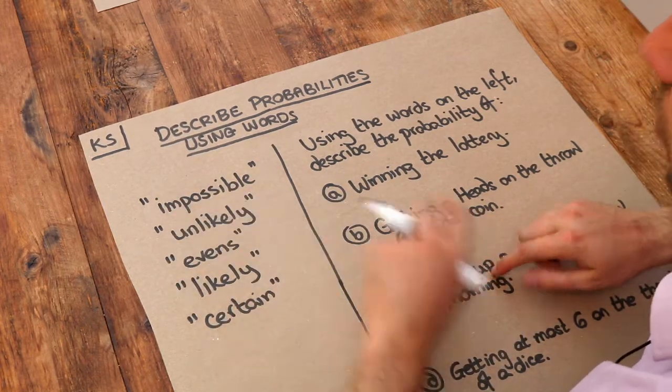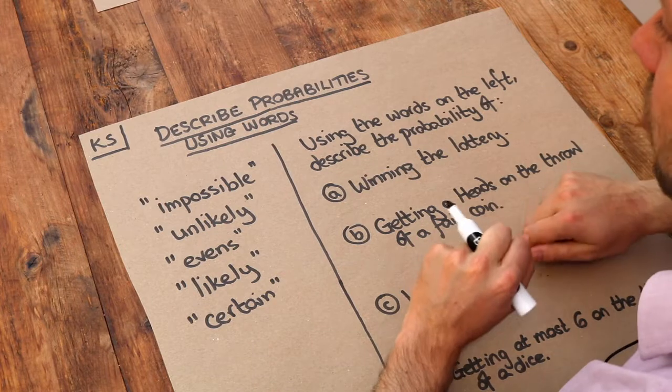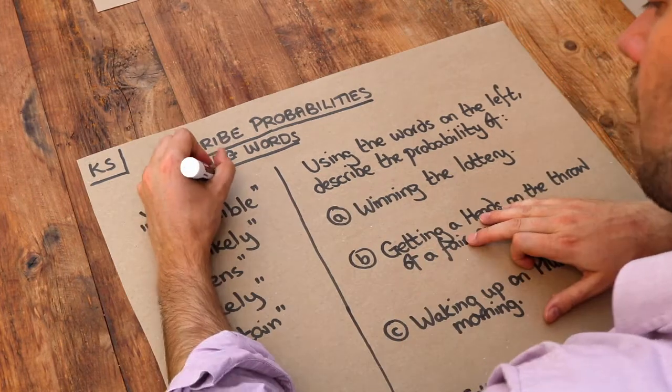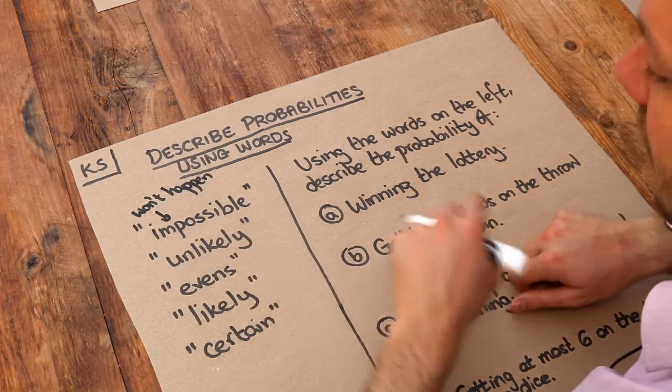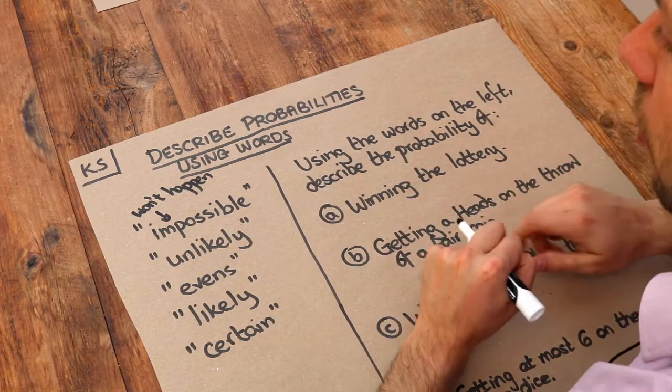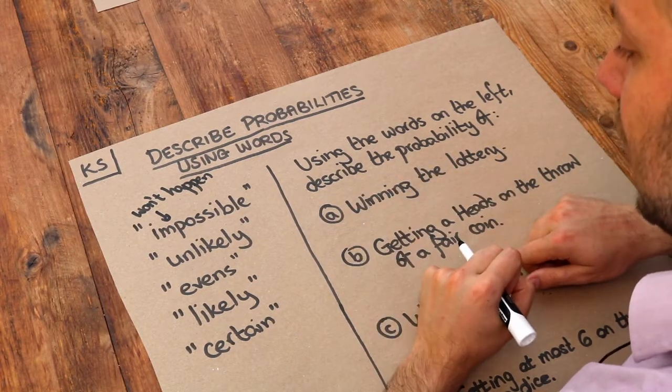Now if something's impossible, that means it can't happen at all. It's absolutely not going to happen. If something is unlikely to happen, then it probably won't happen, but there is a possibility of it happening.